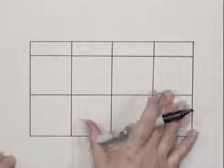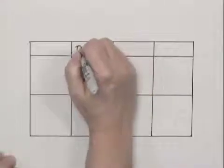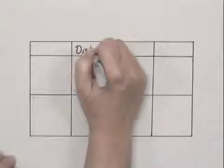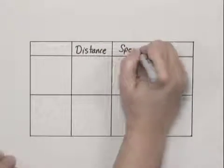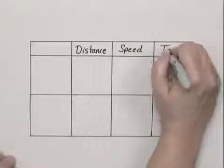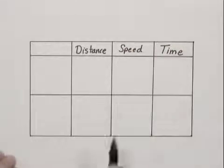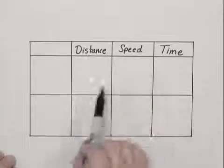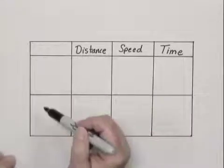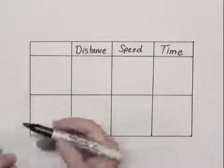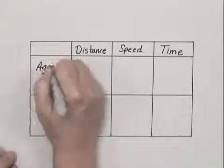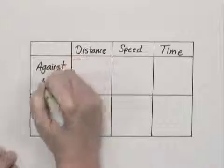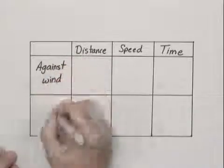The columns that we'll use every time are distance, speed or rate, and time. We use speed and rate interchangeably often. And then over here, you can write the two distance situations. In this case, we're going against the wind, and with the wind.